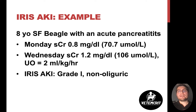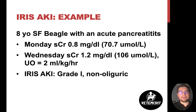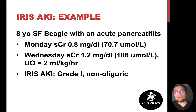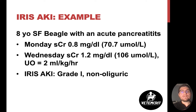Let's look at a couple of clinical examples. An eight-year-old spayed female Beagle diagnosed with acute pancreatitis has a creatinine of 0.8 mg/dL on Monday. On Wednesday, creatinine rises to 1.2 mg/dL, with urine output at 2 mL/kg/hour, which is quite normal. Although 1.2 mg/dL is within the normal reference range, this patient has developed acute kidney injury grade 1, non-oliguric, according to IRIS AKI classification. Even non-azotemic AKI patients require a different approach and may have a different prognosis.